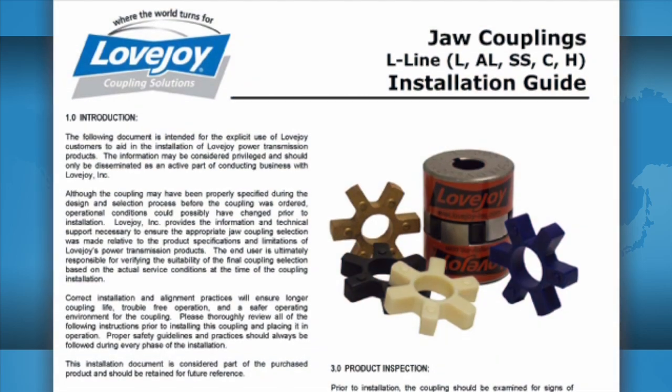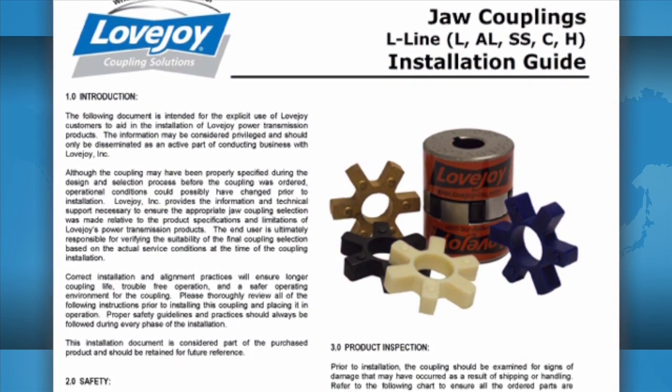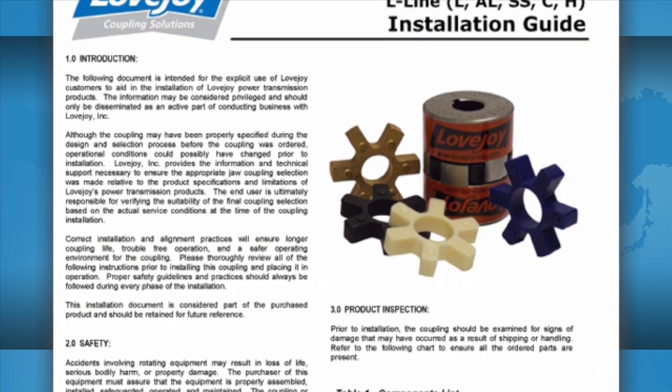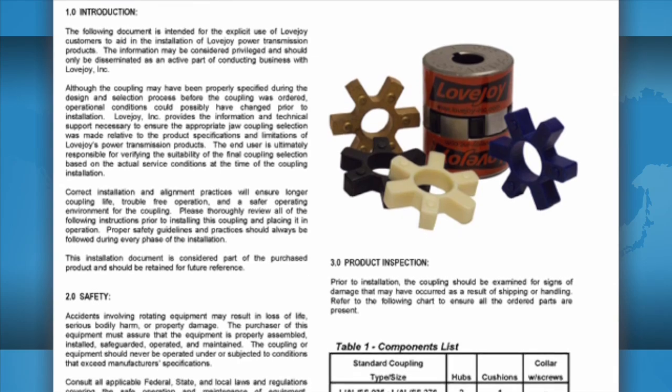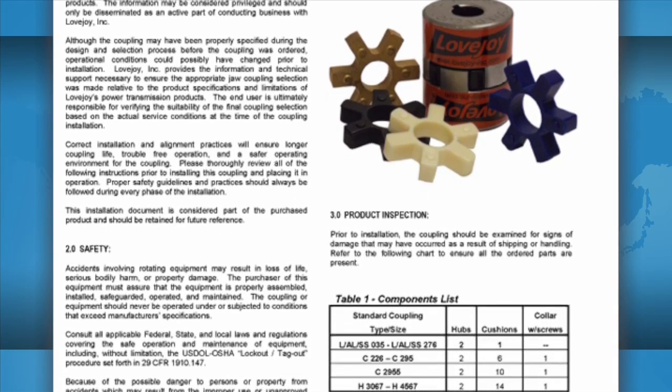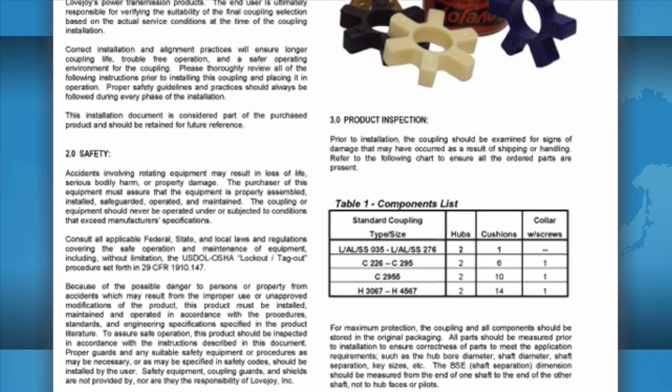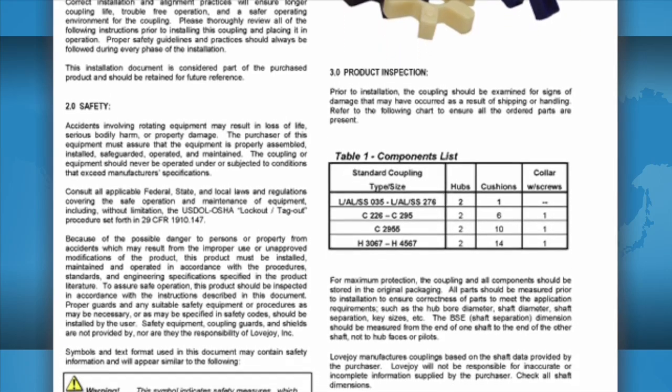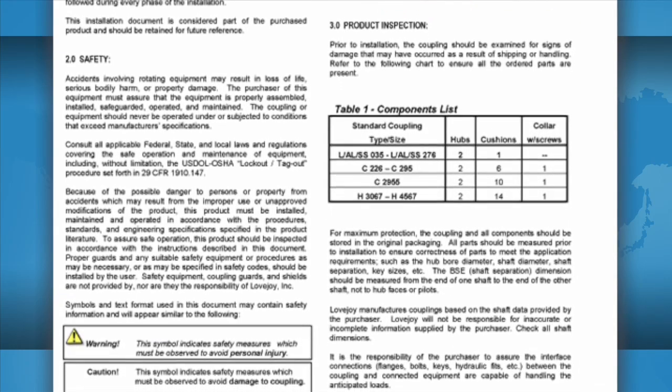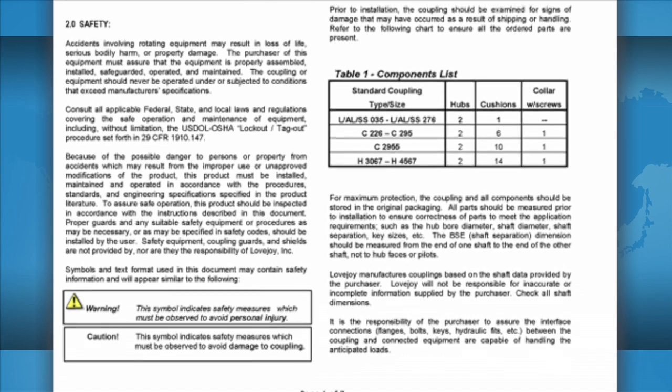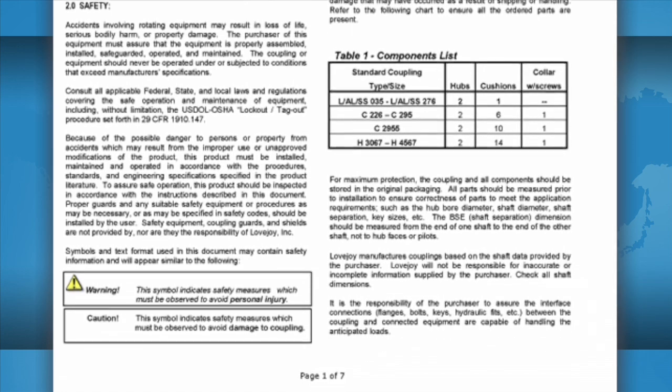It is always recommended to keep a copy of the jaw coupling installation guide readily available when installing a jaw coupling. This guide contains charts that show the allowable coupling misalignment and the torque settings for tightening the set screws. Some installation guides also contain performance and dimensional information important when confirming the coupling selection.